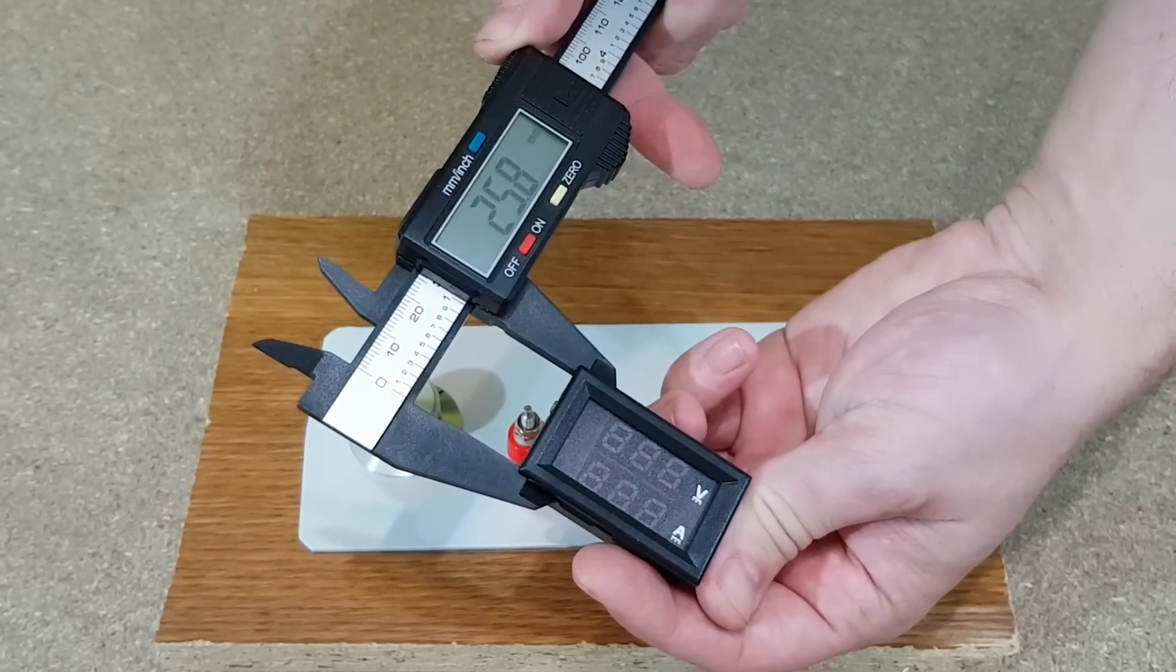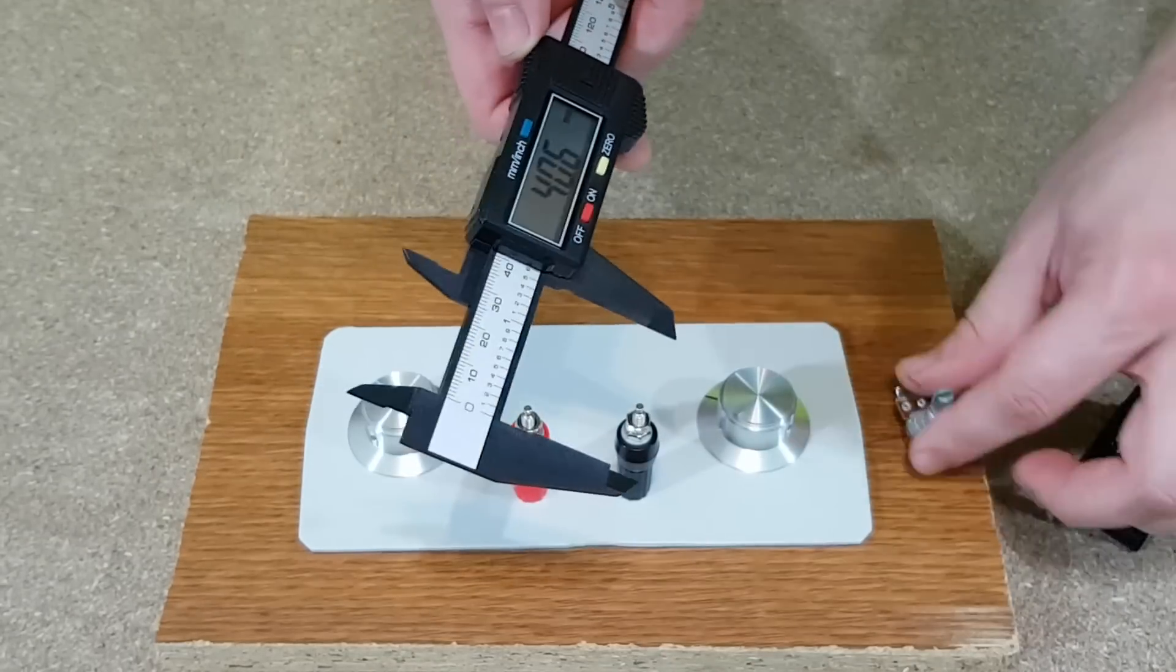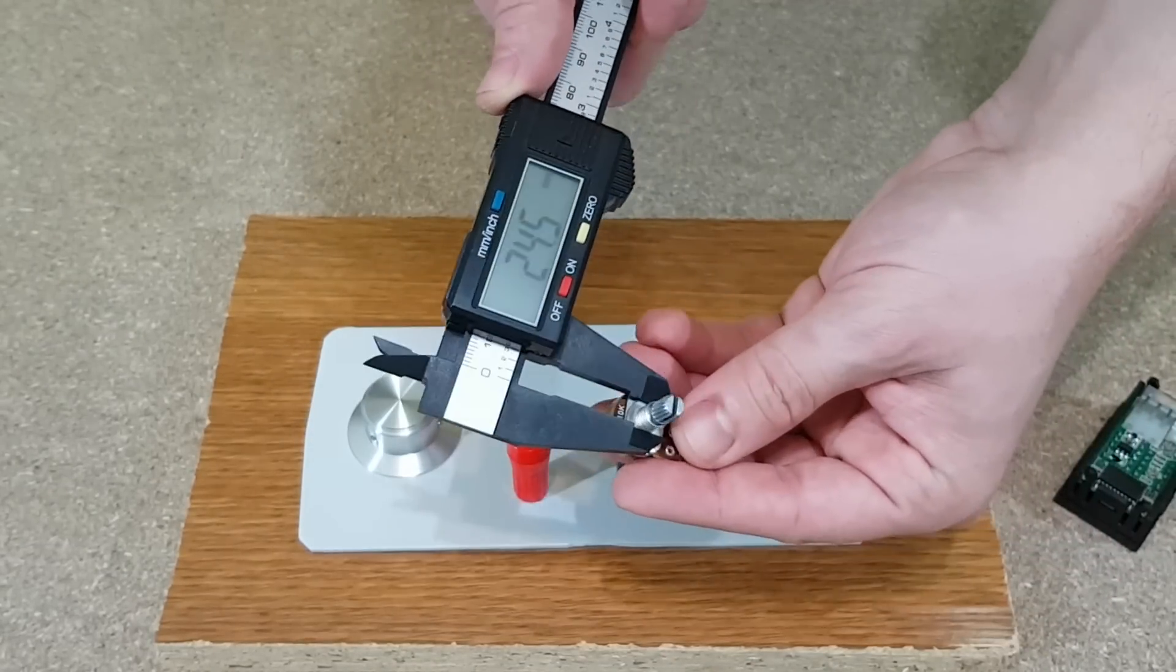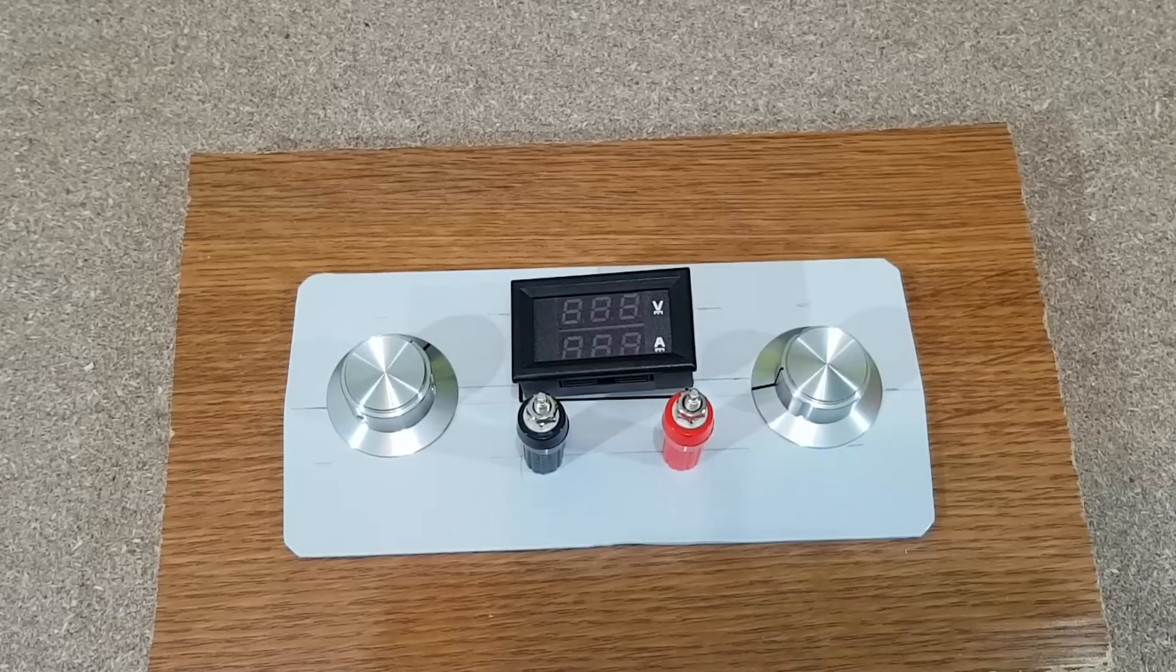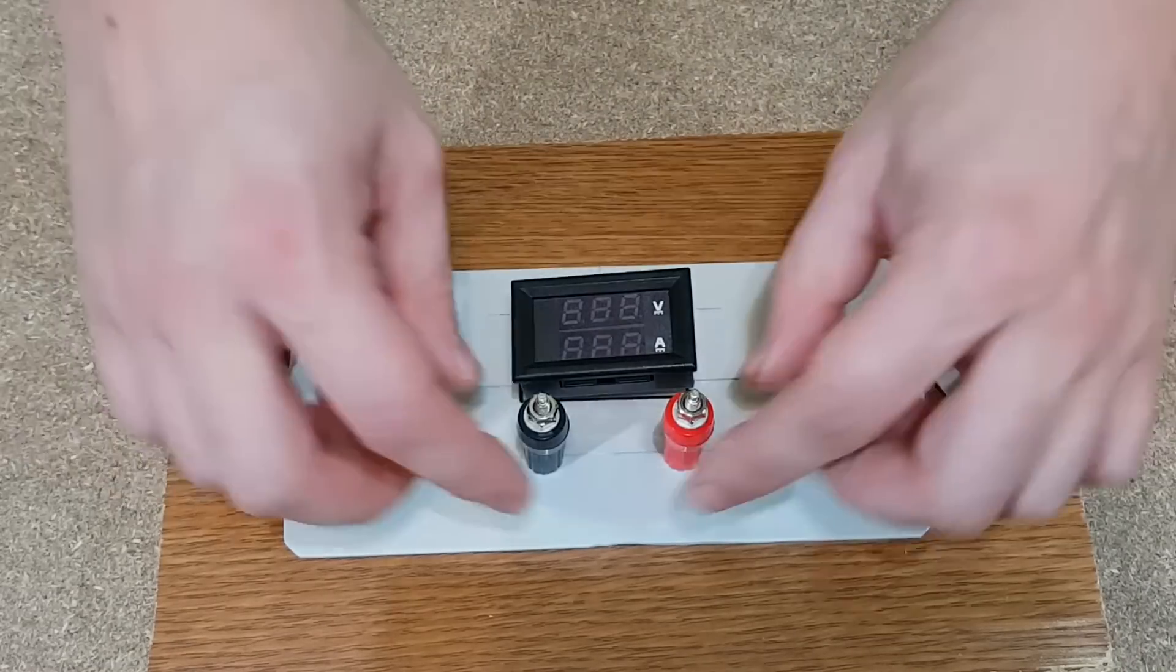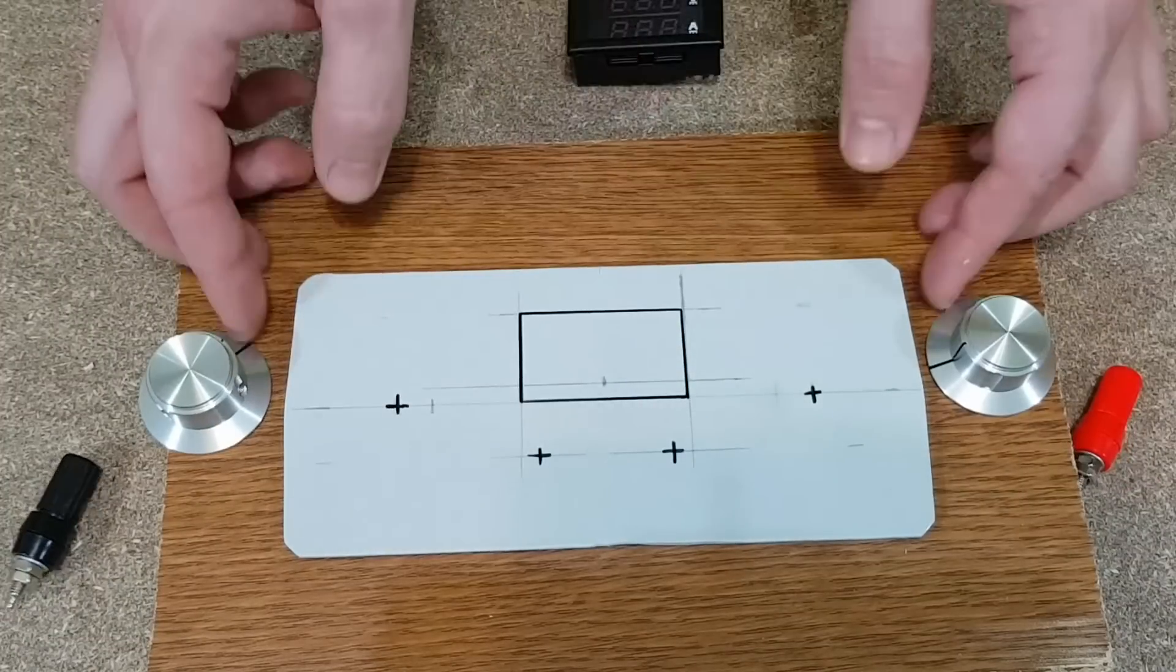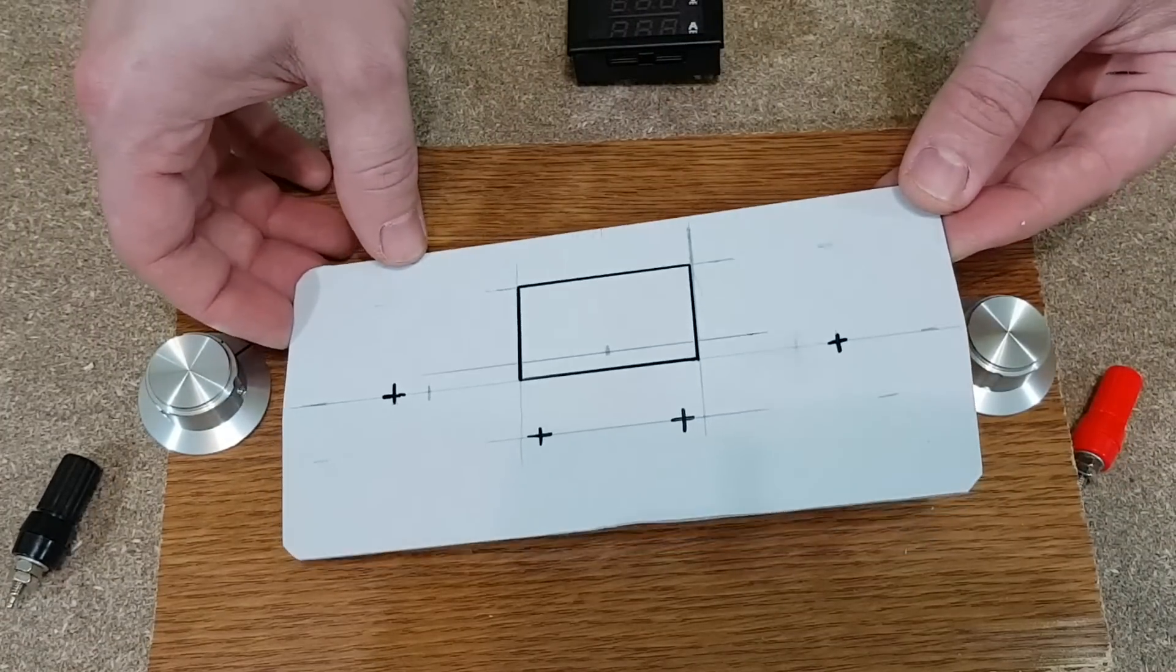Next I need to measure the components dimensions so I will know how to arrange them on the front panel. Some of you may have noticed from my other videos that I like symmetric arrangements. This is very symmetric and I think it's the best way to arrange the front panel for a variable power supply.